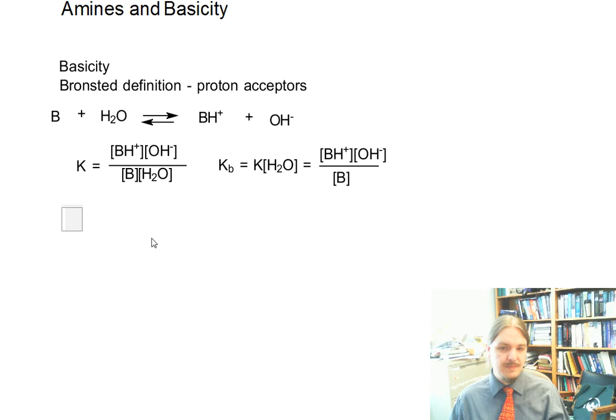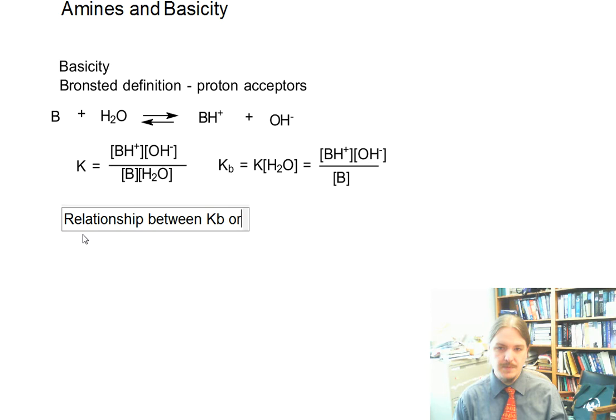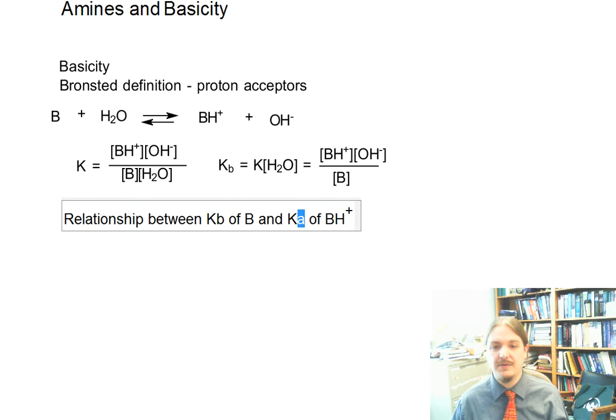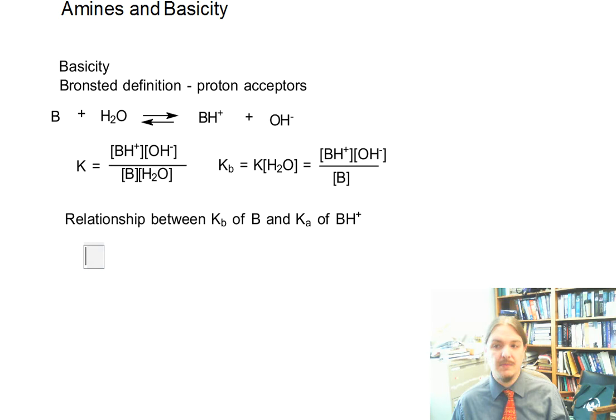But for all systems, there's actually a relationship between KB of B and the Ka of BH+. Because BH+ as a conjugate acid has a Ka value. And if we are talking about in aqueous situations, so in water, Ka times KB is equal to KW, the autoionization constant for water, which is 10 to the minus 14.